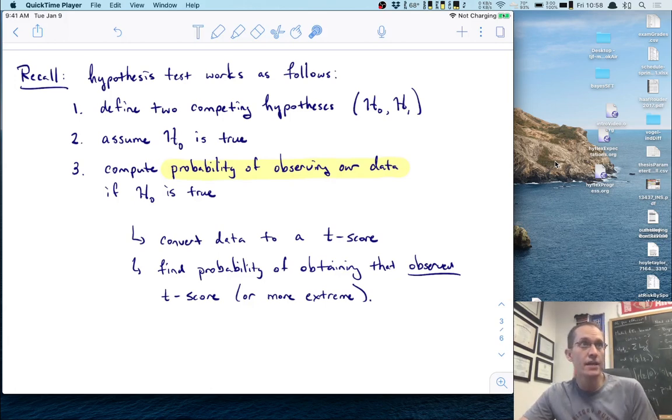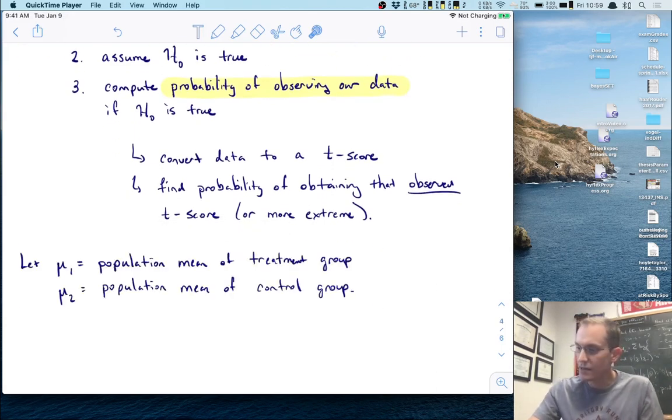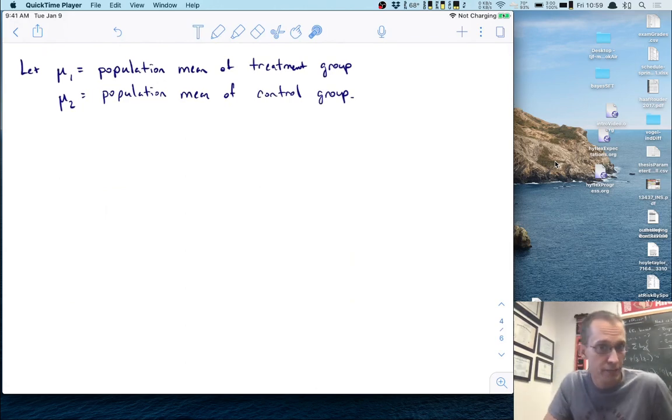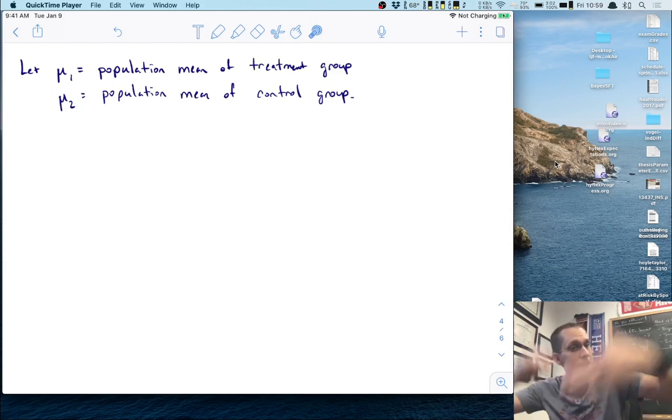How does this work? We need to remember how hypothesis tests work. First we define two competing hypotheses, a null and an alternative. We then assume that the null is true and compute the probability of observing our data if the null is true. Let's work out this hypothesis test. We'll define two population means: mu one for the treatment group and mu two for the control group.